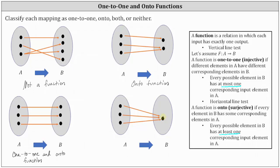For the next mapping, we again have a function. There is only one element in B, which has three corresponding inputs in A. Three is more than at most one, so we don't have a one-to-one function. However, we do have an onto function because having three corresponding inputs meets the requirement of having at least one corresponding input element in A. This function is an onto function.